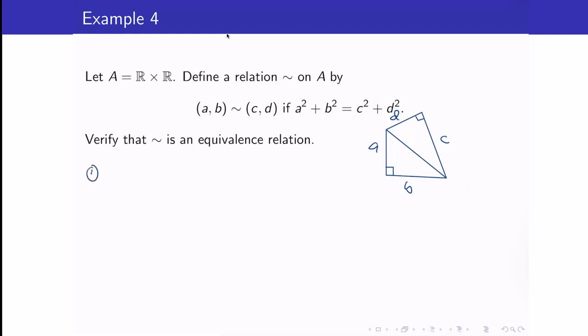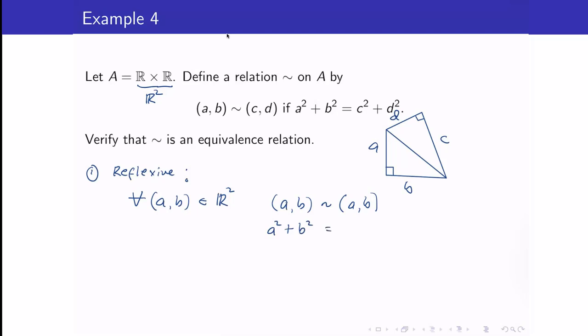Let's check for the reflexive property. For the reflexive property, we take one element of A, but A here is an ordered pair. So for all (A, B) in A or ℝ², we want to check: will it be related to itself? Yes, because A² + B² equals A² + B².